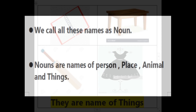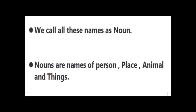So we call all these names as a noun. Yeh sab noun hai, wo sab name hai. So it's called a noun. The noun are names of person, place, animal and things. Noun ka meaning kya hai ki jo bhi person ho ya fir place ho ya fir animal ho ya fir thing ho, unka jo particular naam rehta hai, usको kya bola jata hai — noun bola jata hai.